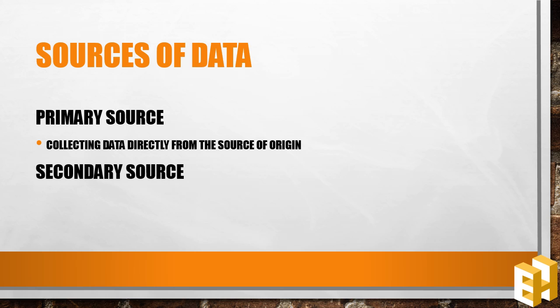Second is the secondary source. It is the source under which the data is already compiled by some other individual or an organization. For example, if I want to know the number of bank branches in India, I can take the data from the RBI, and it would then be considered as a secondary source of data.